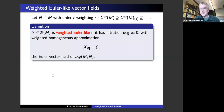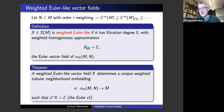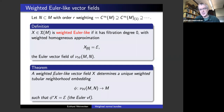We have a definition of Euler-like vector field on these weighted normal bundles, and we have the same theorem as before: if you have a weighted Euler-like vector field, it determines a weighted tubular neighborhood embedding of the weighted normal bundle such that the weighted Euler-like vector field corresponds to the Euler vector field — the vector field which generates the scalar multiplication operation. So we don't have a vector bundle, but we have scalar multiplication, and so we still have an Euler vector field.